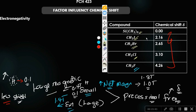The question is: how does electronegativity influence chemical shift? As the electronegativity of the atom attached increases, the chemical shift value increases. Why? Because electronegativity deshields a proton — it makes the proton less shielded. What causes the small magnetic field is the electrons around it, the chemical environment. But now something is coming to take those electrons away.